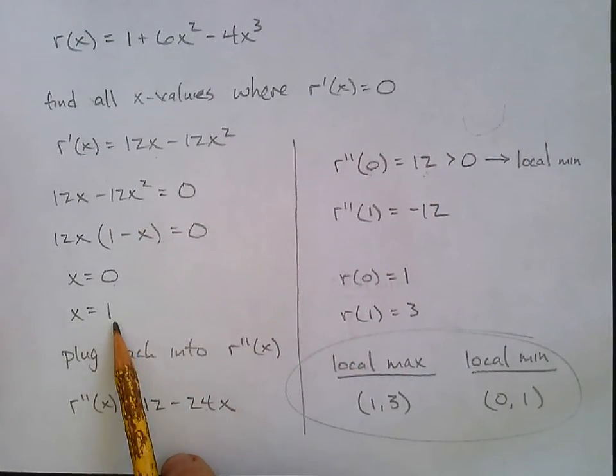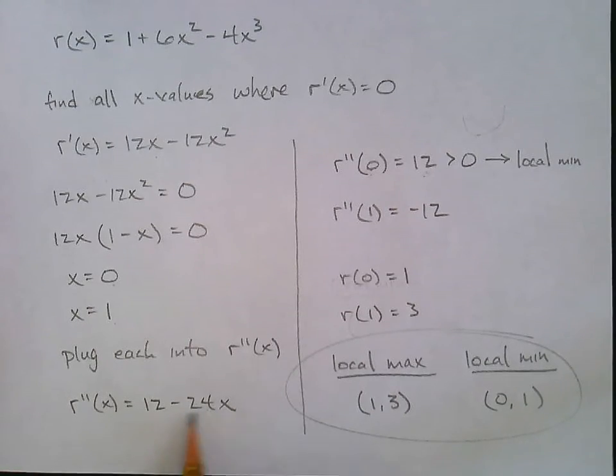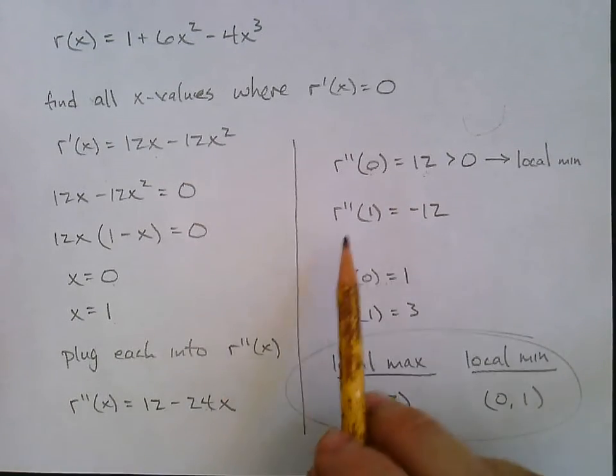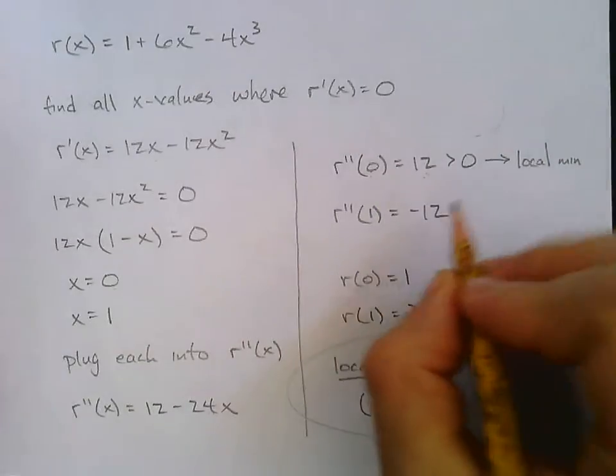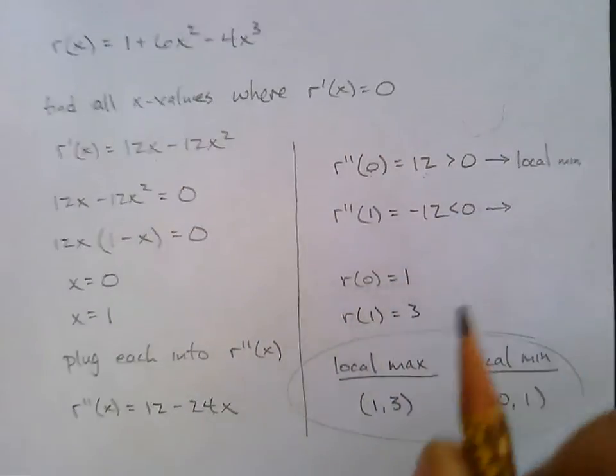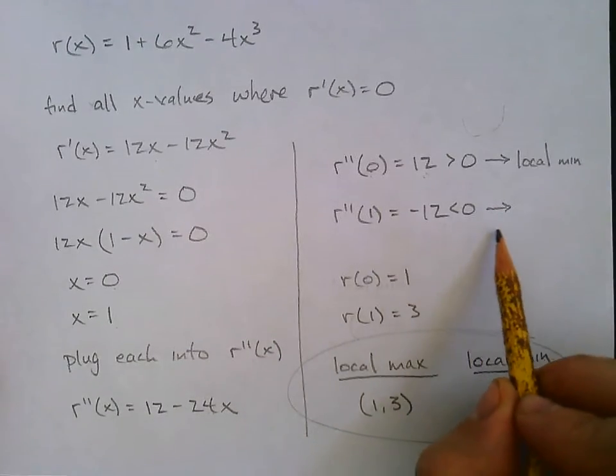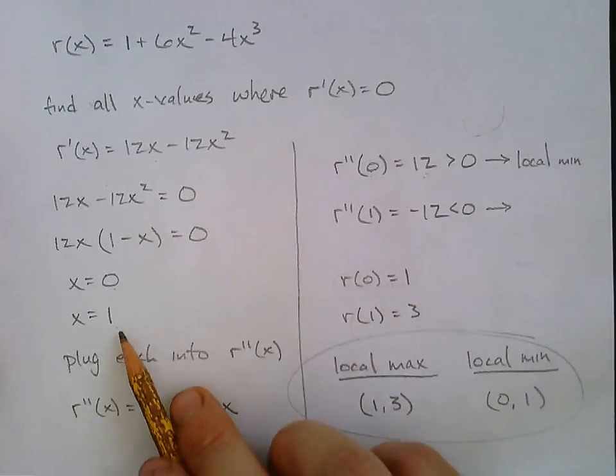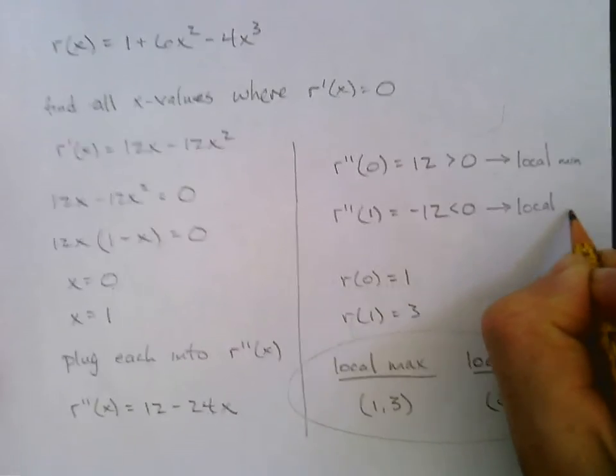Let's do the same thing for one. Let's plug one into the second derivative. 12 minus 24 times one. Negative 12. So the 12 doesn't matter. It's a fact that it's negative. So that means it's concave down. And the first derivative is zero. So this must be a local max.